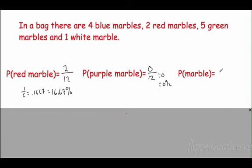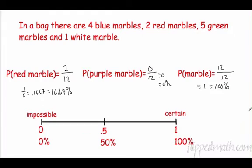What's the probability of picking any marble? Twelve out of twelve equals one, or 100%. This brings up an important point: probability always falls between zero and one. The probability of picking a red marble is about 16%, somewhere near the lower end of that range.